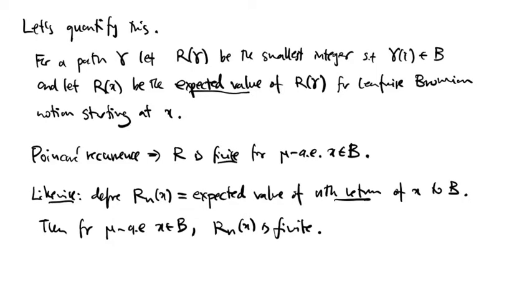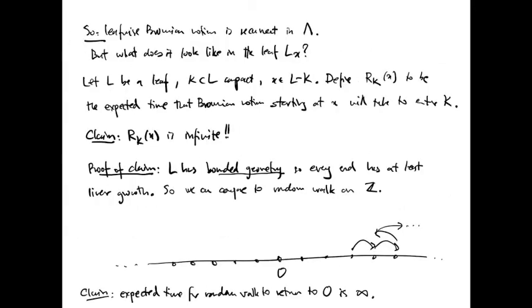In a similar way, we can define R sub n of x to be the expected time for the nth return of the point x to the set B under leafwise Brownian motion. Again, for mu almost every point x in the set B, R sub n of x is finite.